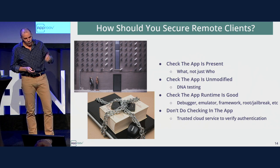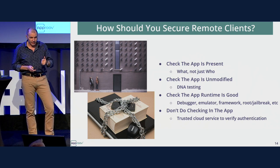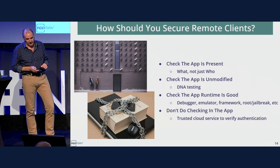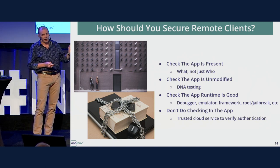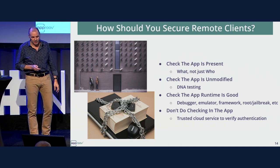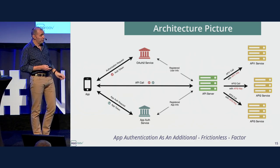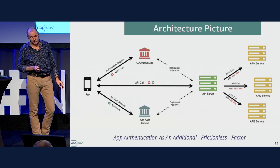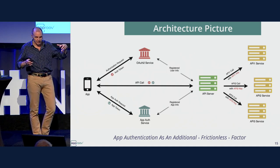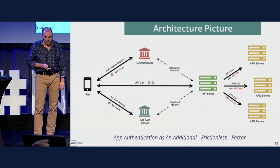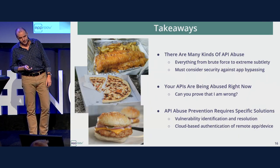To secure remote clients, you need to check that the app is present and not being bypassed, make sure it's not modified, and make sure the runtime environment it's operating in is good — you define what is good. Don't put any testing, secrets, or checking in the app itself, because that's a really bad idea. App authentication is, in our view, a complementary approach to user authentication. We have customers who combine our tokens with OAuth tokens to bind an app authentication process to a user session.